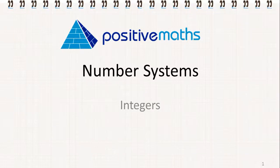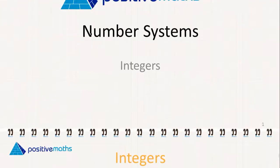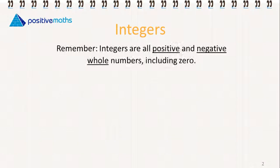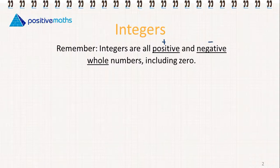In this video for Positive Maths, we're going to learn about integers. Integers are all positive and negative whole numbers, including zero.